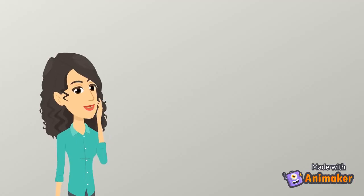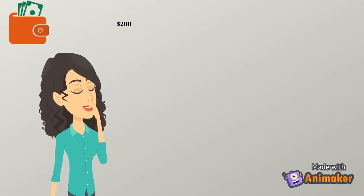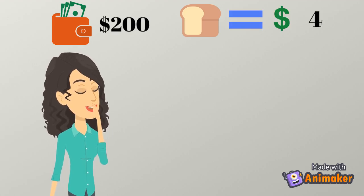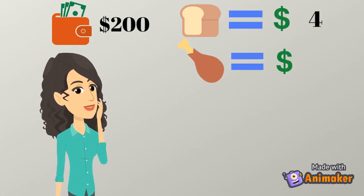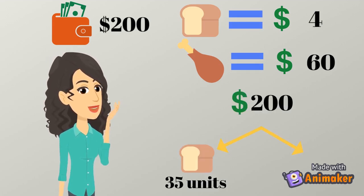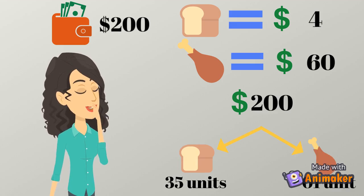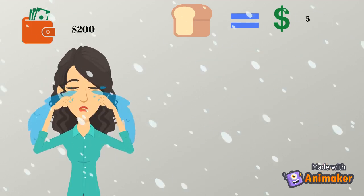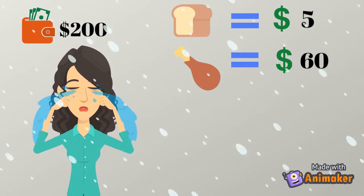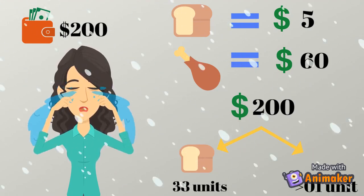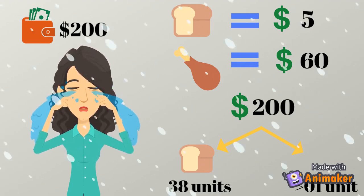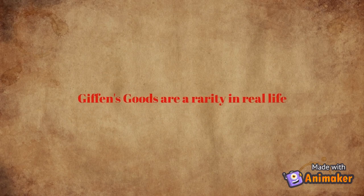An example given by Giffen was that of bread and lamb. Assume Miss Anna, who has an income of $200, where bread is priced at $4 per packet and lamb at $60. Bread being an essential commodity, she allots $140 to bread and $60 for lamb. Now if the price of bread increases, Anna is not going to reduce her consumption of bread — instead she will spend more on bread, as it is not only essential but also more affordable compared to lamb. This concept is difficult to find in real life.